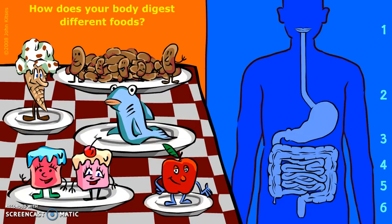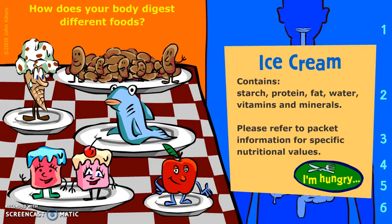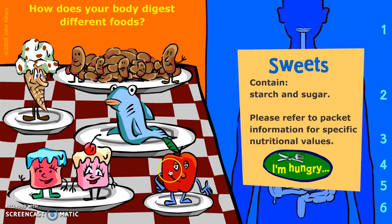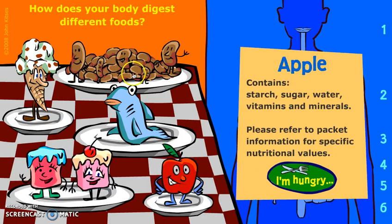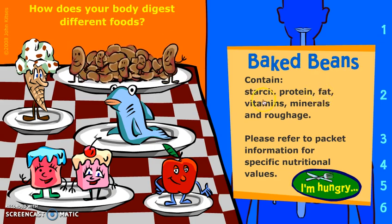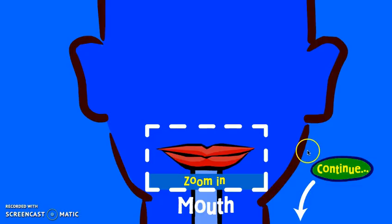Now let's choose one of these foods to observe its passage through the digestive system. We have baked beans, ice cream, grilled fish, sweets, or the humble apple. I'm going to choose the baked beans as they contain starch — a form of carbohydrate — protein, and fat, so our three macronutrients, as well as vitamins, minerals, and roughage, which we commonly refer to as fiber.